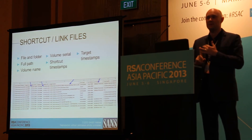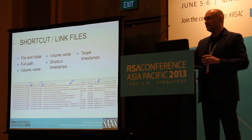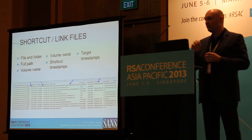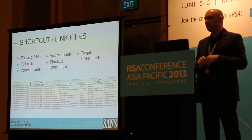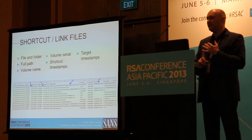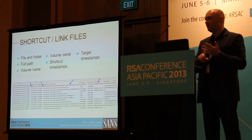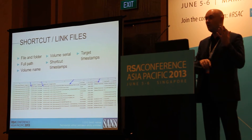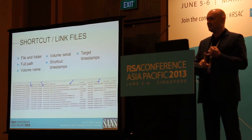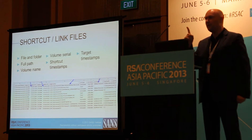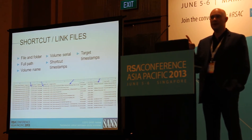Think about it for a second. If you've got a case where someone has a sensitive document on a USB key and they open up that document, the shortcut file is created. That shortcut can tell you identifying details of the USB key — the volume name, serial number — and it can also give you all the information about the document that was accessed. All of that can be done without the USB key and without the document, through one shortcut file. It's a pretty powerful artefact.